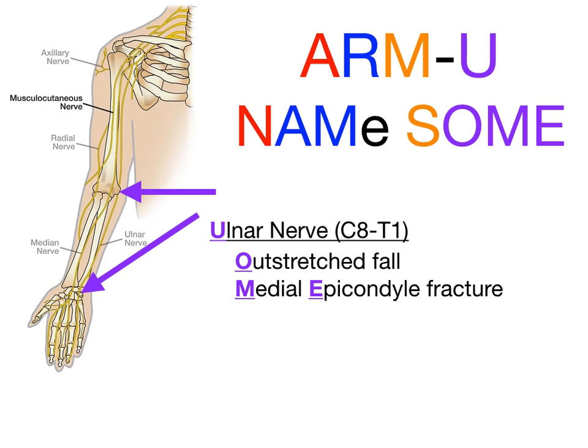Looking at the picture, the top purple arrow points right behind the medial epicondyle, where the ulnar nerve runs. If you fracture or injure the medial epicondyle, you can injure the ulnar nerve. So in 'Arm University,' U stands for ulnar, paired with O for outstretched fall and ME for medial epicondylar fracture — that's how you pair the nerve injuries with their locations in the upper extremity.